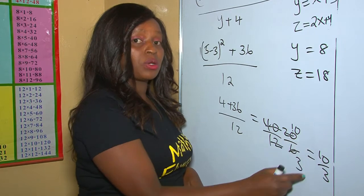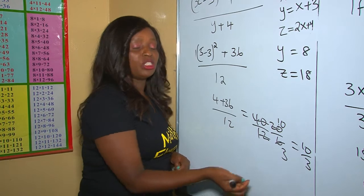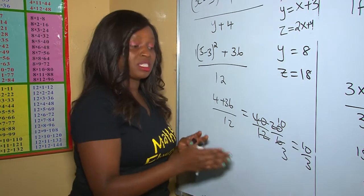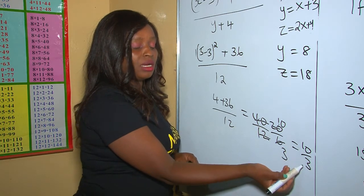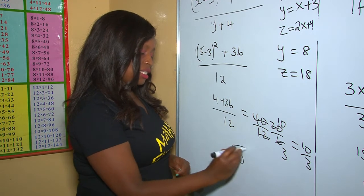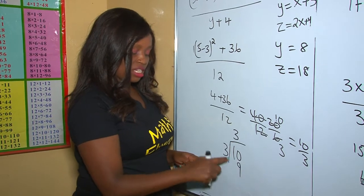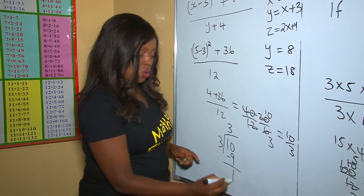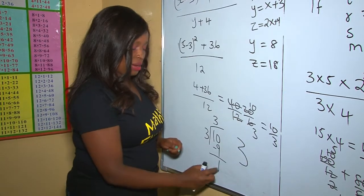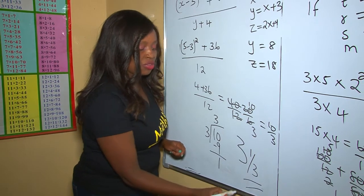At that point, 10 and 3 can't be divided further. You can't leave your answer as an improper fraction — the rule says to always simplify and express as a mixed fraction. So we divide the numerator by the denominator: 10 divided by 3. 3 goes into 10 three times (3 times 3 is 9), with a remainder of 1. Our answer is 3 and one-third.